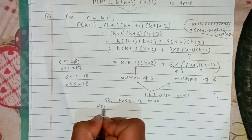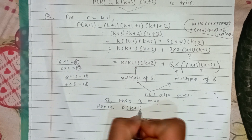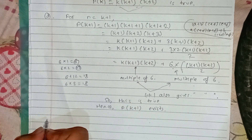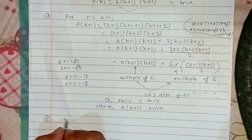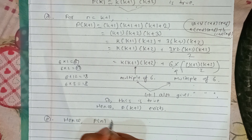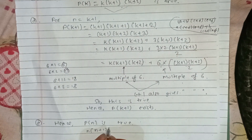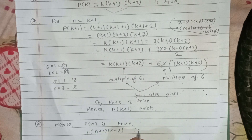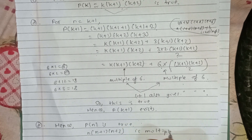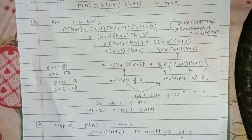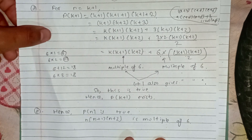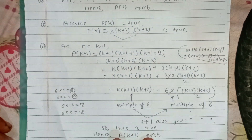To prove P(k+1) exists, we have shown the final step. Hence, P(n) is true for all n. That means n into n plus 1 into n plus 2 is a multiple of 6 for all natural numbers n. Thank you very much.